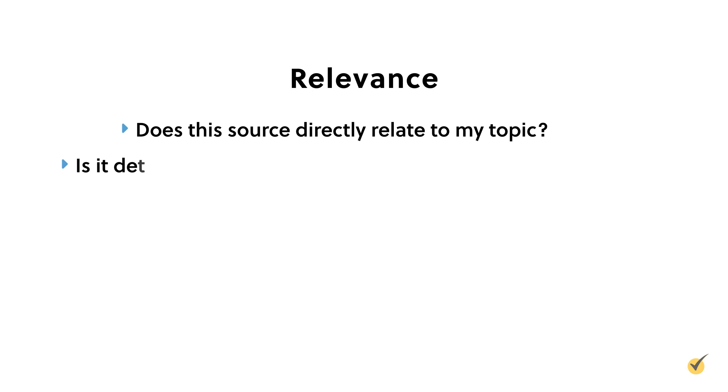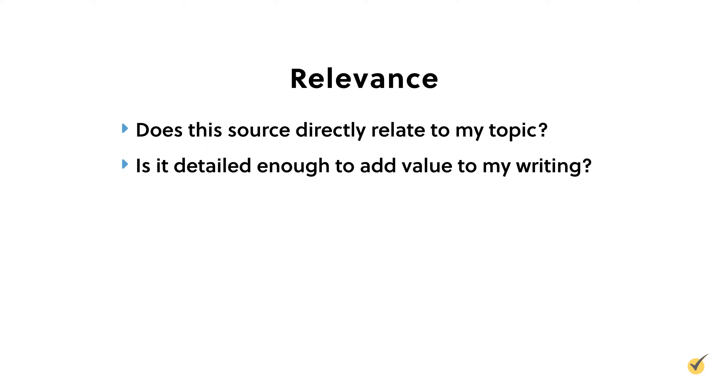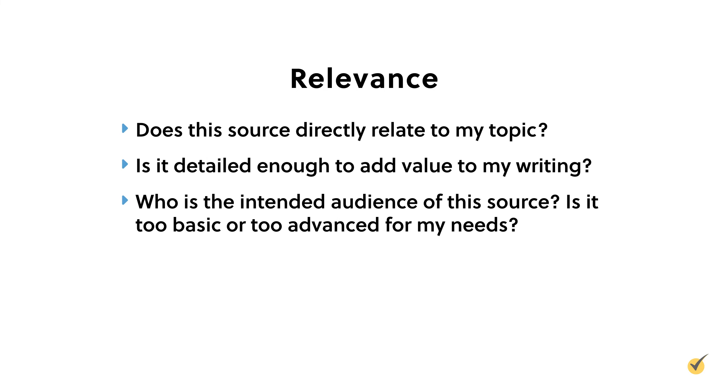The next factor to consider is the relevance of your source — how closely the information relates to your topic or research question. Just because a source is current or authoritative, it doesn't mean it's relevant to your paper. If you're writing about the current structure of the internet, an article about the latest Windows operating system won't be very helpful, even though the information is up-to-date. Ask yourself: Does this source directly relate to my topic? Is it detailed enough to add value to my writing? Who's the intended audience, and is it too basic or too advanced for my needs?